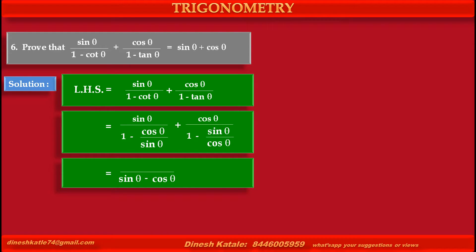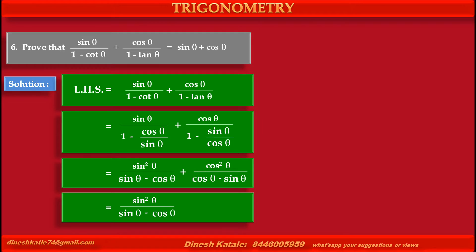At the denominator, by cross multiplication, we get sin theta minus cos theta upon common denominator sin theta, and the numerator becomes sin squared theta. In the second term, by cross multiplication we get cos theta minus sin theta upon common denominator cos theta, and the numerator becomes cos squared theta.